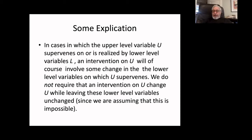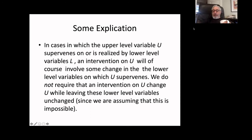When you intervene on an upper-level variable, you're going to change the lower-level variables that are the supervenience base. If you have a gas in a container and you put it into a heat bath changing the temperature, you're going to change the mean kinetic energy of the molecules. So we don't require that an intervention on an upper-level variable leave the lower-level supervenience base unchanged — we're assuming that's impossible. You can't intervene on temperature while leaving the underlying molecular variables completely unchanged.